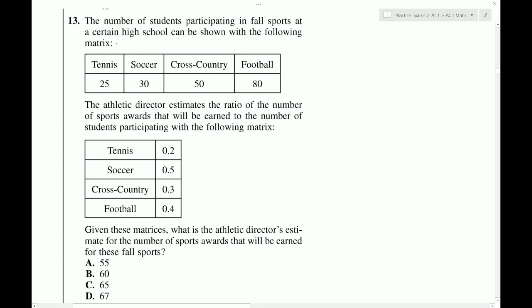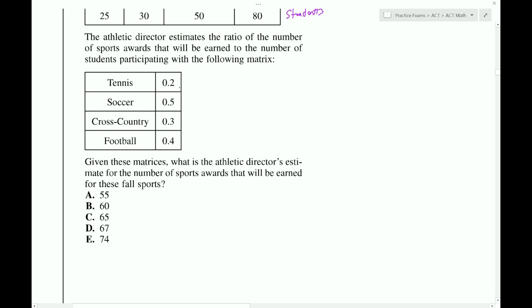The number of students participating in fall sports at a certain high school can be shown with the following matrix. The athletic director estimates the ratio of the number of sports awards that will be earned to the number of students participating with the following matrix. Given these matrices, what is the athletic director's estimate for the number of sports awards that will be earned for these fall sports? In the first chart here, the unit is students. This is a ratio of student awards to students.